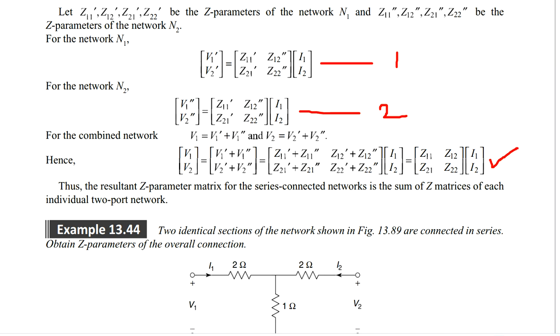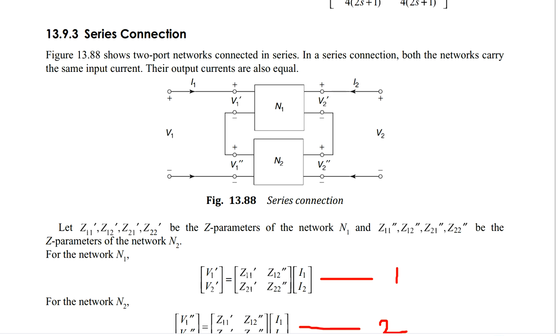This is the final Z parameters matrix for overall network because the overall network is having input current I1, port 2 current I2 and input port V1, output port V2.